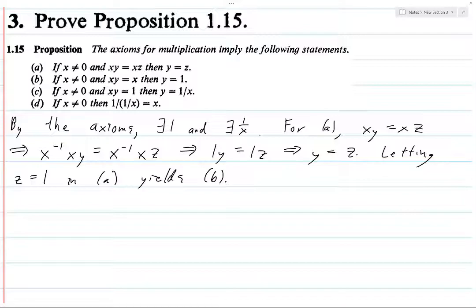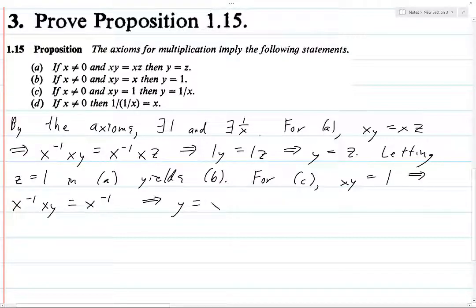What about c? For c, xy equals 1. Then again, we'll multiply on the left by the inverse. And then the x inverse and the x on the left side cancel, and we end up with y. So y equals x inverse.